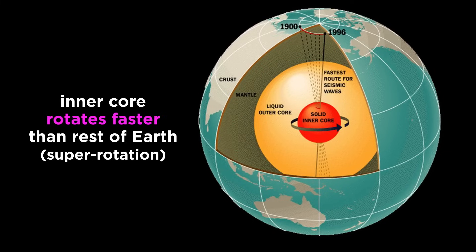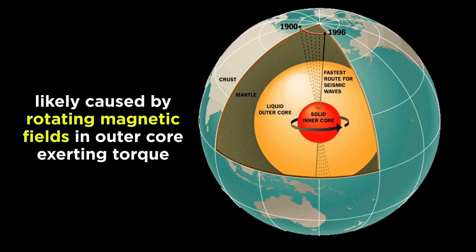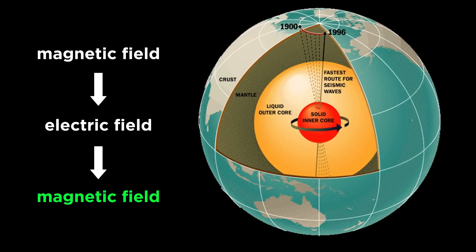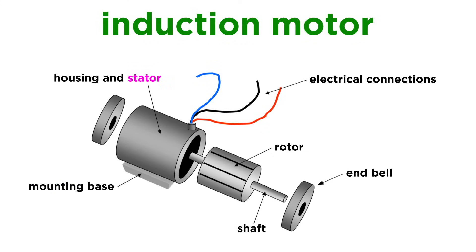The inner core also rotates faster than Earth as a whole — a phenomenon called superrotation. It is thought to be caused by rotating magnetic fields in the outer core exerting a magnetic torque on the inner core, similar to how an induction motor works. Magnetic fields induce electric fields in conductors, and the created electric field manifests an additional magnetic field that interacts with the original. In an electric motor, the stator windings produce a rotating magnetic field, which induces an electric current in the rotor, causing the rotor to spin as it is dragged along by the rotating magnetic field of the stator.